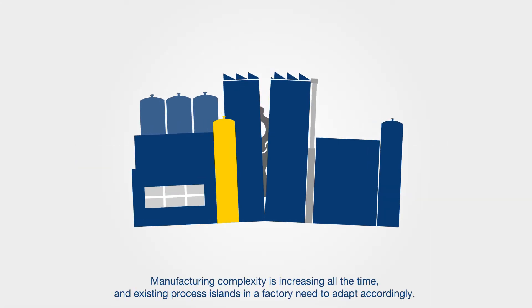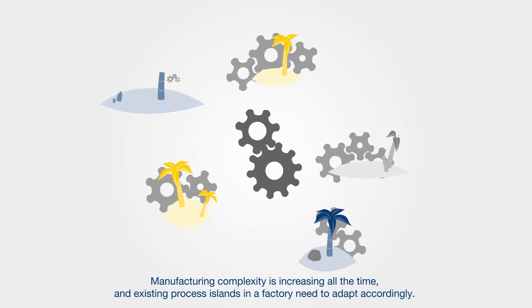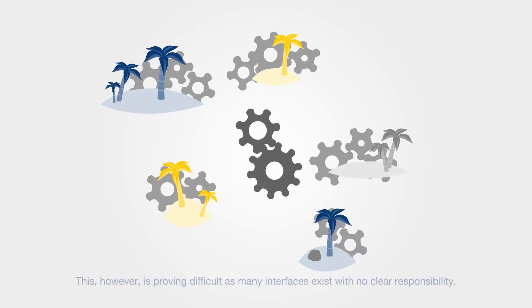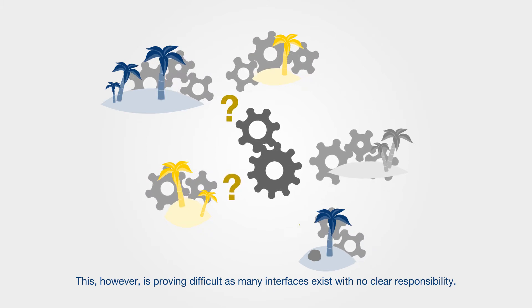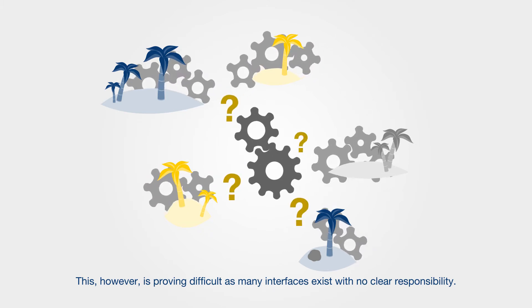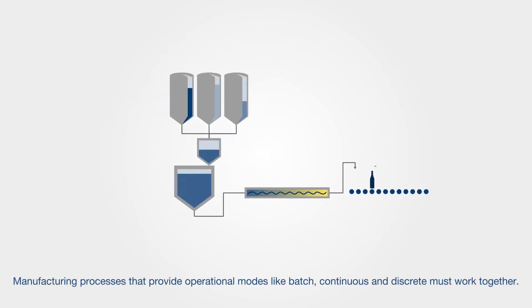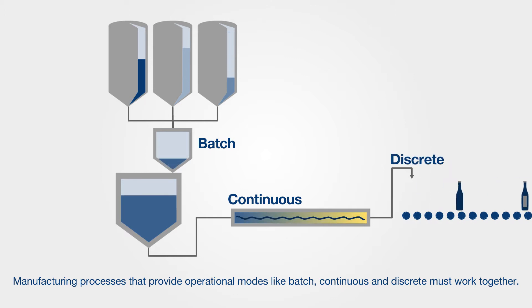Manufacturing complexity is increasing all the time, and existing process islands in a factory need to adapt accordingly. This, however, is proving difficult as many interfaces exist with no clear responsibility. Manufacturing processes that provide operational modes like batch, continuous and discrete must work together.